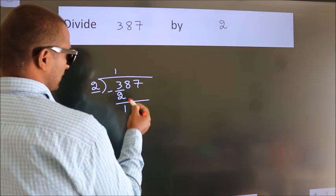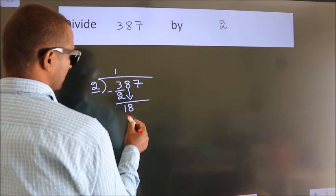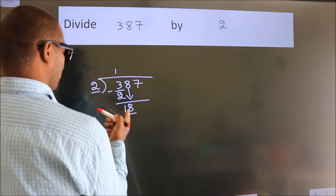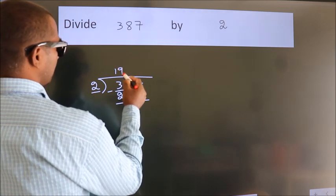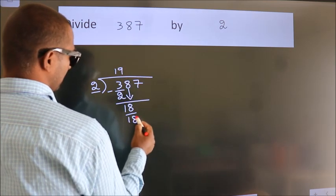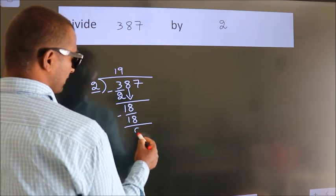After this, bring down the beside number. So, 8 down. So, 18. When do we get 18 in 2 table? 2 9s 18. Now, we subtract. We get 0.